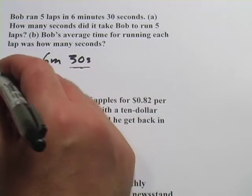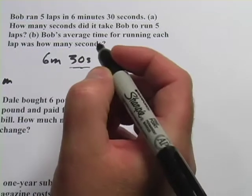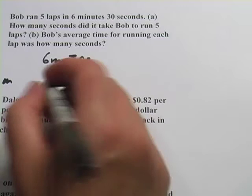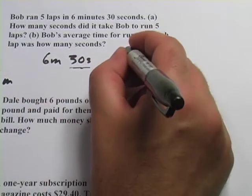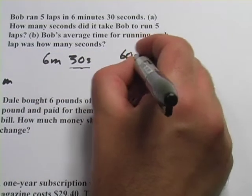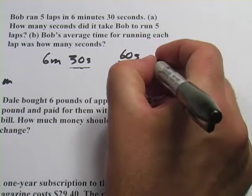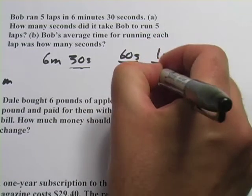So my conversion factor here, I'm starting with six minutes. I can write it two ways, right? There's 60 seconds in one minute, or for every one minute there's 60 seconds.